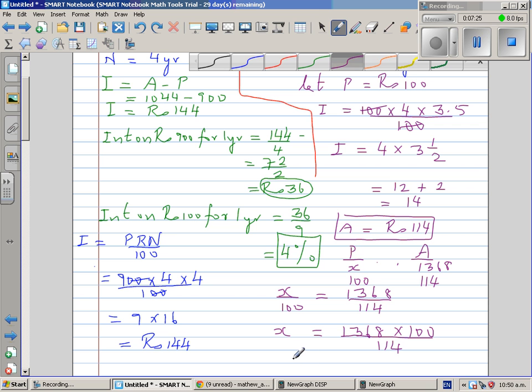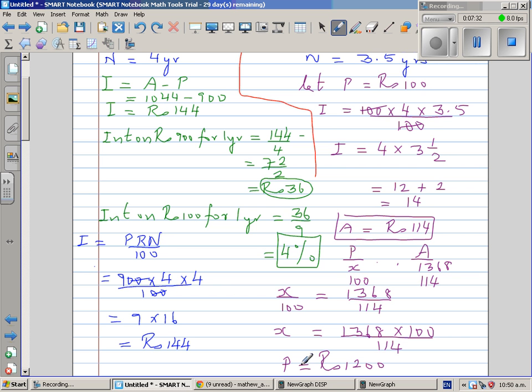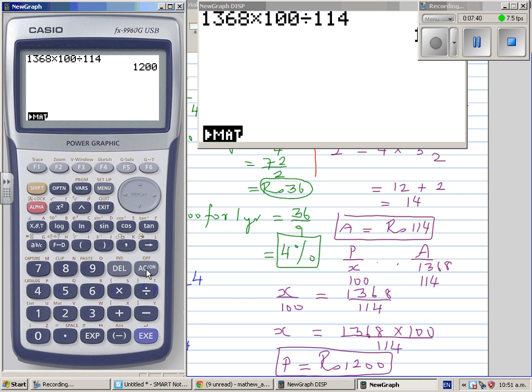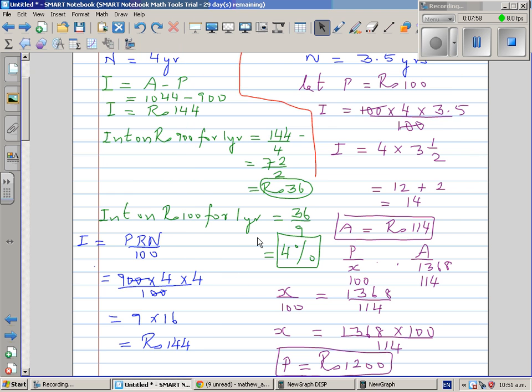So this is your principle: rupees 1200. And you can confirm backwards. Let's use the calculator. So P times R times N over 100. So 1200 times 4 times 3.5 divided by 100 will give you 168 is the interest. And 1200 plus 168 is 1368.